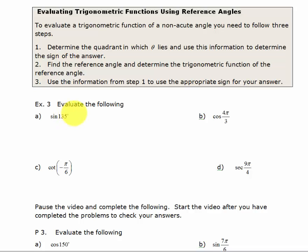We want to evaluate the sine of 135 degrees. There are three basic steps: first, determine the quadrant in which theta lies so that we can determine the sign of our answer; second, find the reference angle and determine the trigonometric function of that; and third, combine those two steps together to come up with our answer.